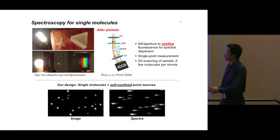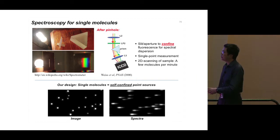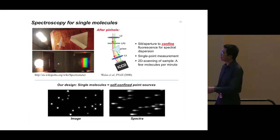Now let's switch to combining spectroscopy with super-resolution microscopy. The typical way of doing spectroscopy is to use a slit to confine light in one dimension, then use a prism to disperse that one-dimensional structure into a second dimension as a spectrum. This slit is the centerpiece for this type of measurement, and it was also the basis for measuring the spectrum of a single molecule — using a pinhole or slit in confocal microscopy to confine fluorescence before dispersing it into a spectrum.